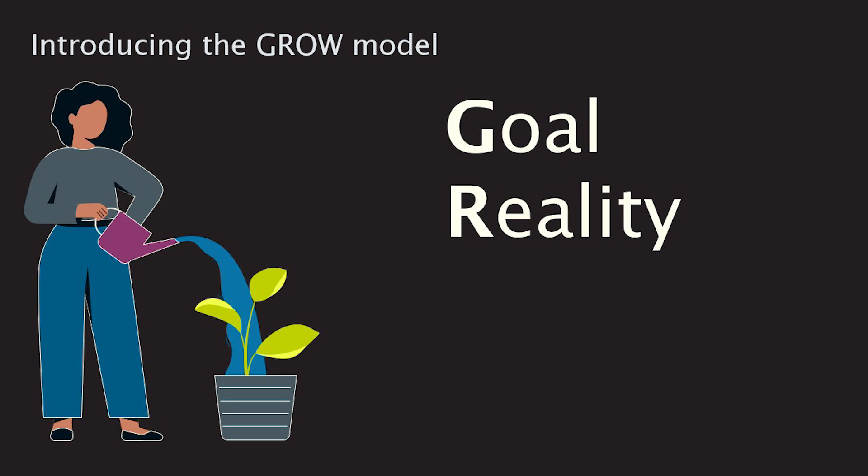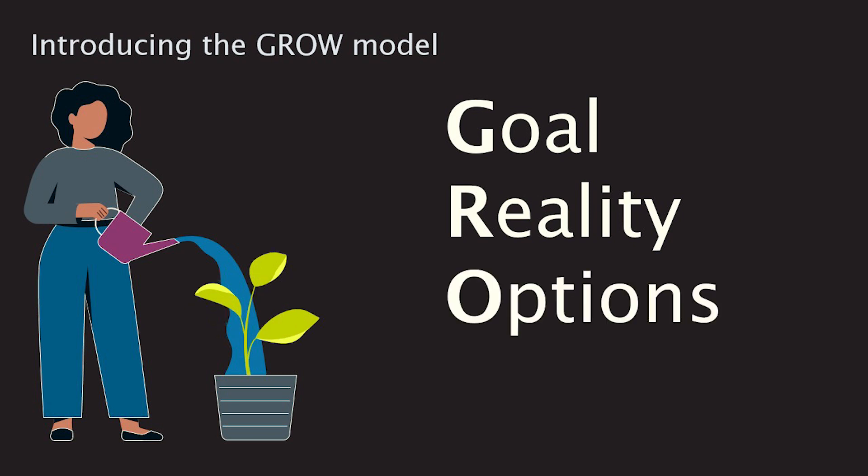The third stage of the GROW model is to consider your options. What options are available that you can try in order to move towards your goal? Is there something else you can do that makes a bigger difference compared to your current activity? You should consider the advantages and disadvantages of each option, as this will help you rule out the less effective suggestions.